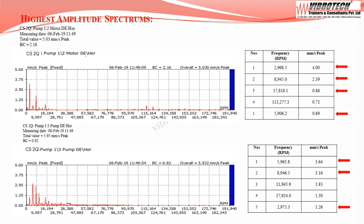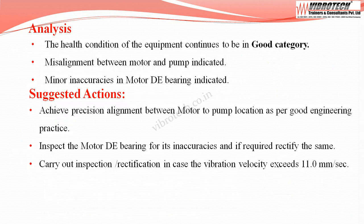Even though vibration levels are well within limits and the equipment falls under the good category, on going through the spectrum and frequencies at motor drive end, dominant peak frequencies of 1x, 3x, higher order frequencies, and 2x running RPM are observed, indicating bearing inaccuracies and misalignment between motor and pump. At the pump drive end, dominant peak frequencies of 2x, 3x, and 1x running RPM indicate misalignment between motor and pump. The equipment is analyzed to have misalignment and minor bearing inaccuracies at the motor drive end.